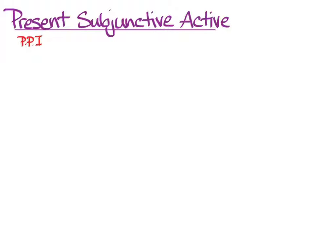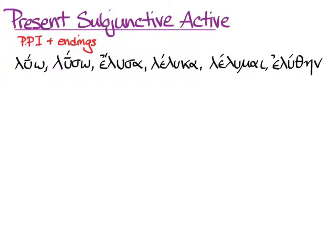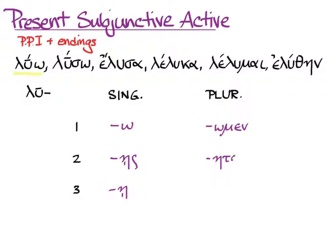Everything present comes from the first principal part, and we'll need endings to show person and number. Here's Luo and its six principal parts — we need principal part one. To get the stem, we take that principal part and remove the omega, giving us 'Lu.' Now we need endings and a chart: singular and plural, first, second, and third person. The endings for the singular are: -ō, -ēs, -ē; and plural: -ōmen, -ēte, -ōsi. The third plural can also have a nu movable. Accent is recessive. We can't give a default translation without knowing what kind of clause we're using.